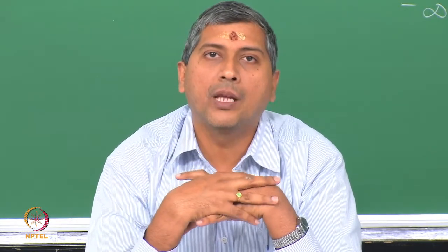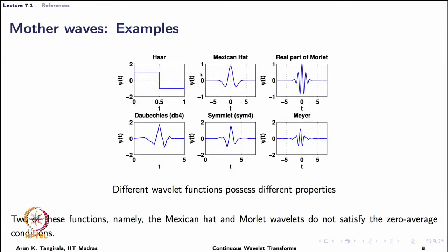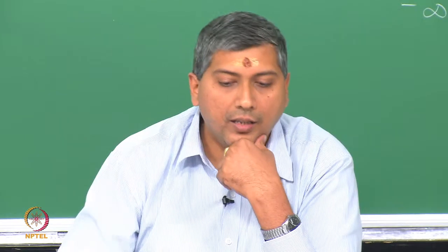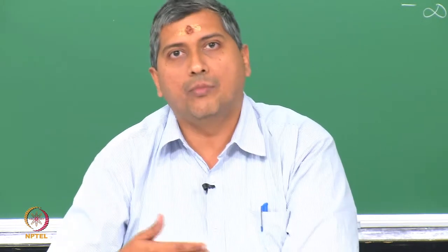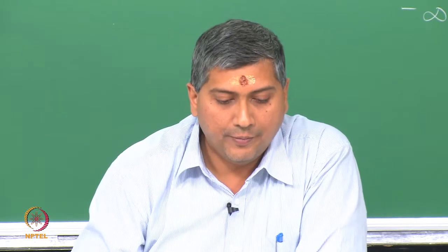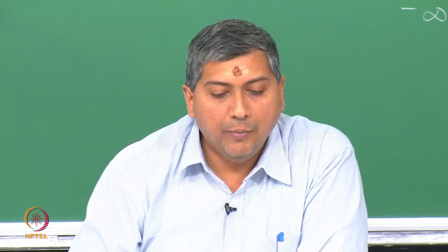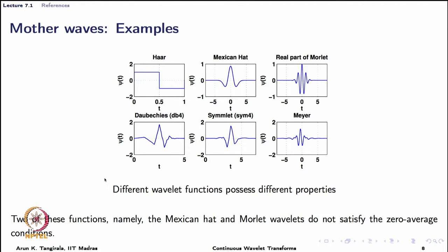Each wavelet has different characteristics and depending on what you want to analyze in the signal, you choose a particular wavelet. For example, to detect sharp discontinuities, Haar is the ideal choice, while for detecting regularities a smoother wavelet is preferred. It should be mentioned that the Mexican hat and Morlet wavelets do not satisfy the so-called zero-average condition generally required of a mother wave — we will see why that condition becomes necessary shortly.